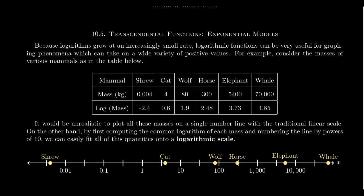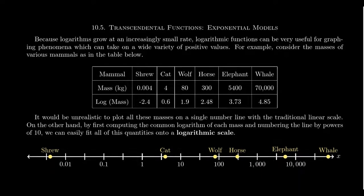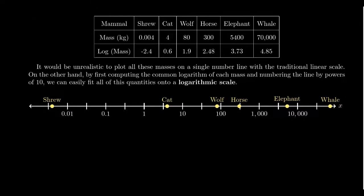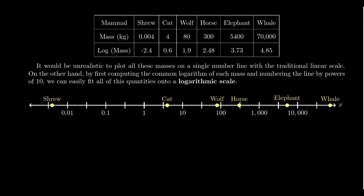The distance between points on a logarithmic scale can sometimes be misleading for those not used to them. If you're thinking in terms of a linear scale, you might be misled: two points on a logarithmic scale separated by just one mark means one point is 10 times larger than the other. A difference of two marks represents one point being 10 squared — that is, 100 times larger than the other.